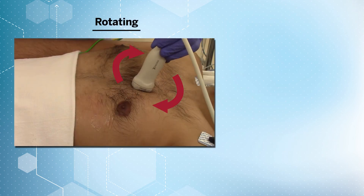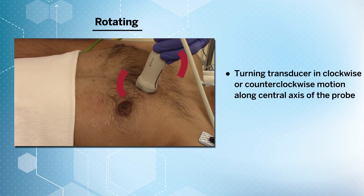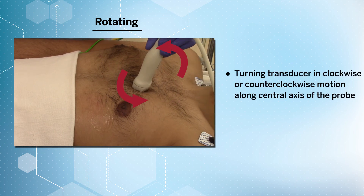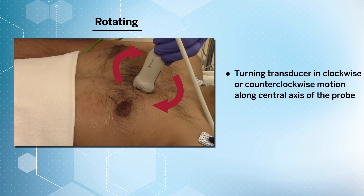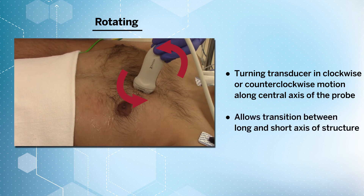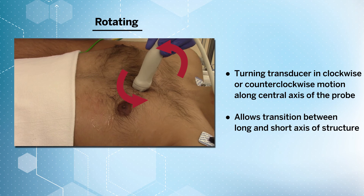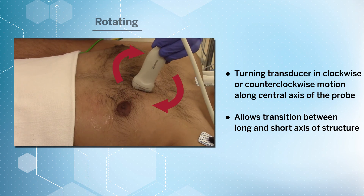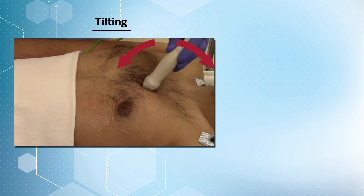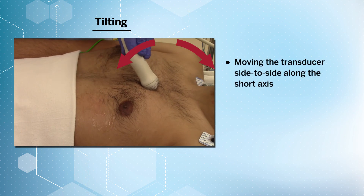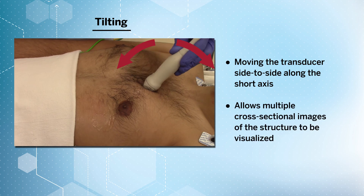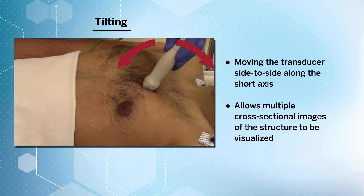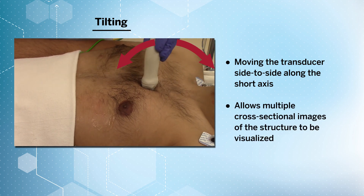Rotating the probe involves turning the transducer in a clockwise or counterclockwise direction along the central axis of the probe. This movement is often done to transition between the long and short axis of a specific structure. Tilting or fanning the probe involves moving the transducer from side to side along the short axis of the probe. This motion allows multiple cross-sectional images of a structure to be visualized.